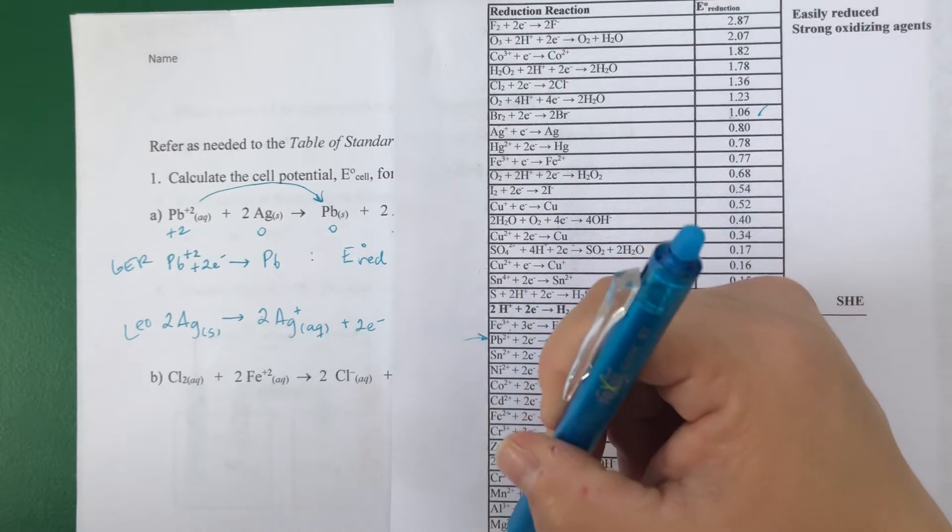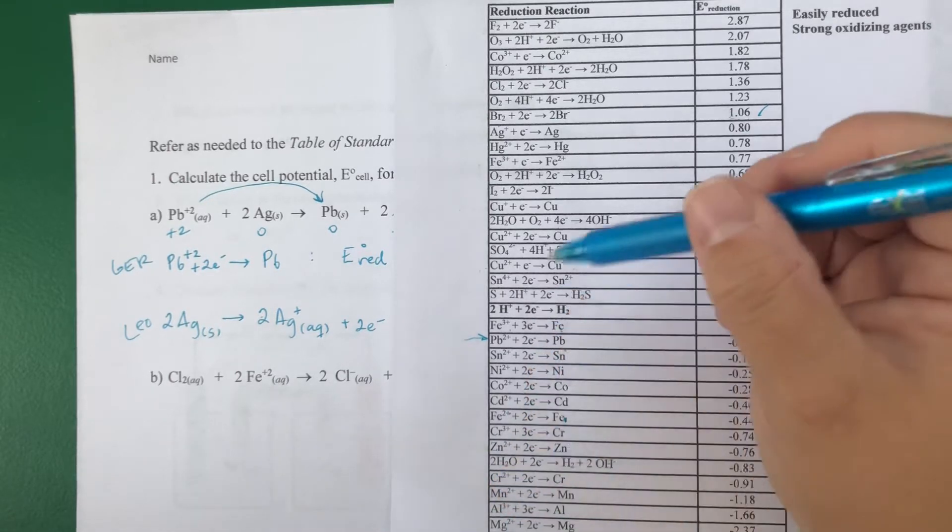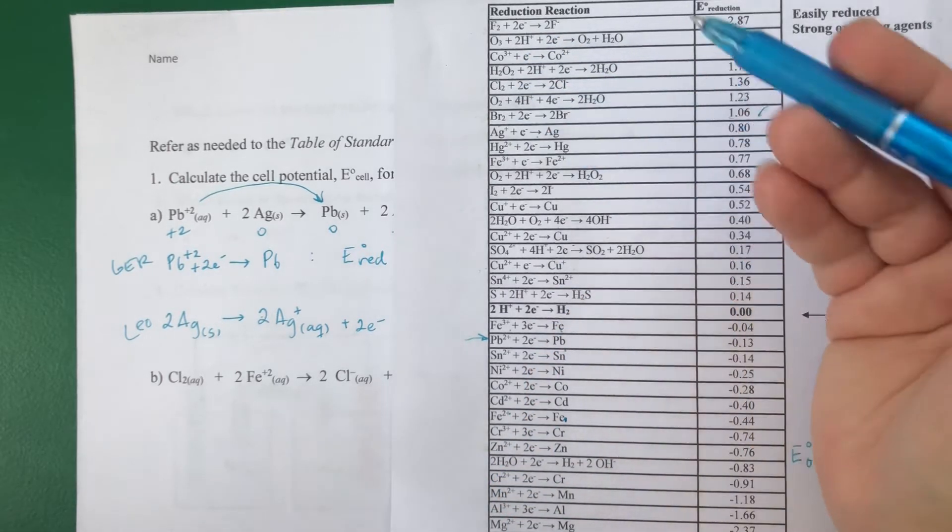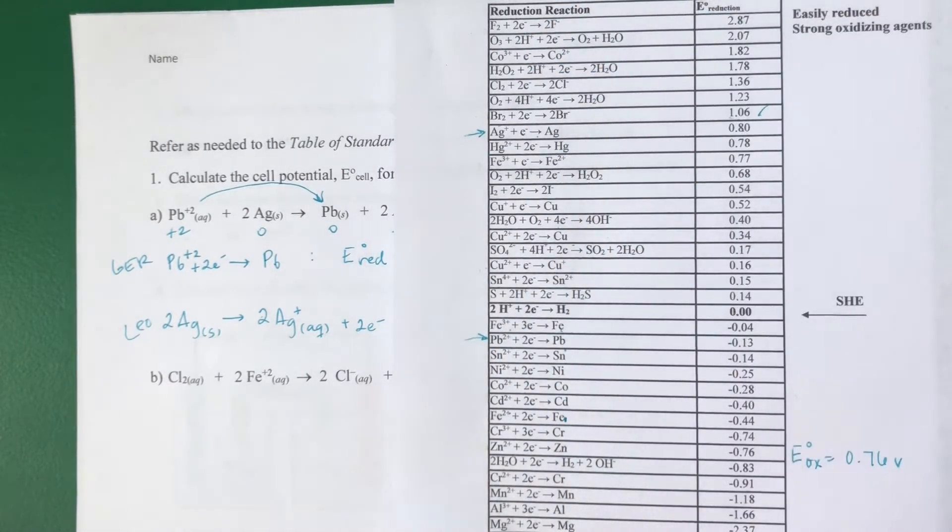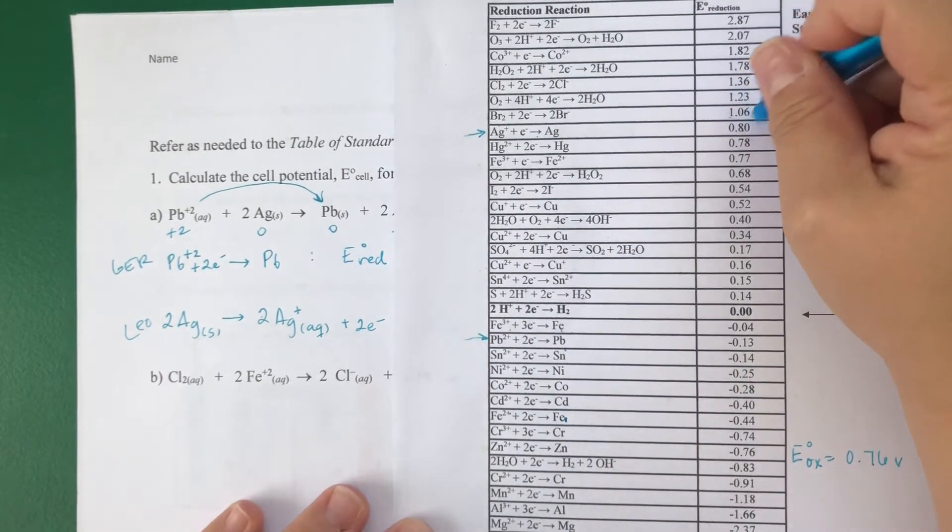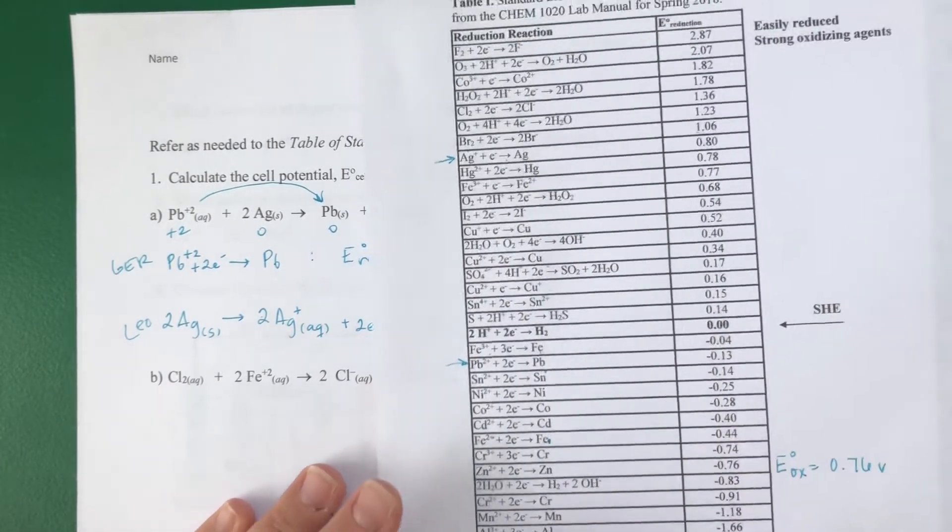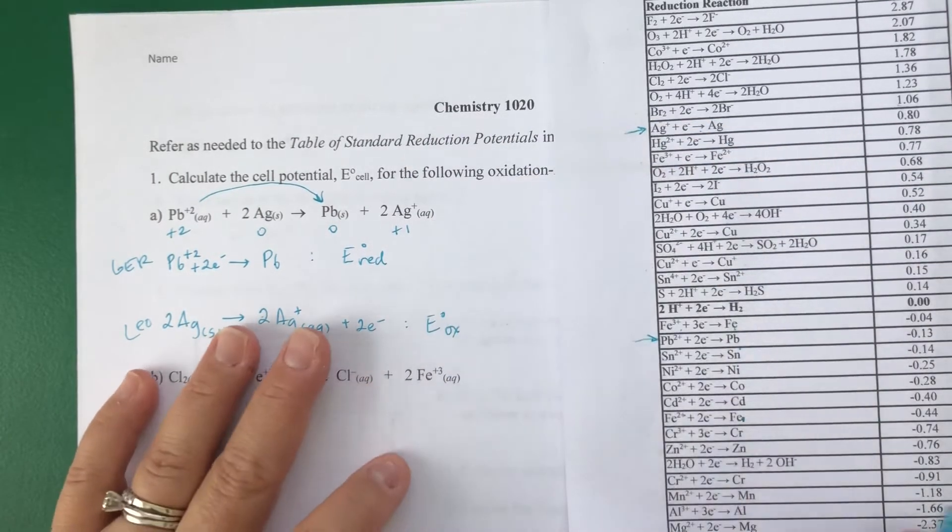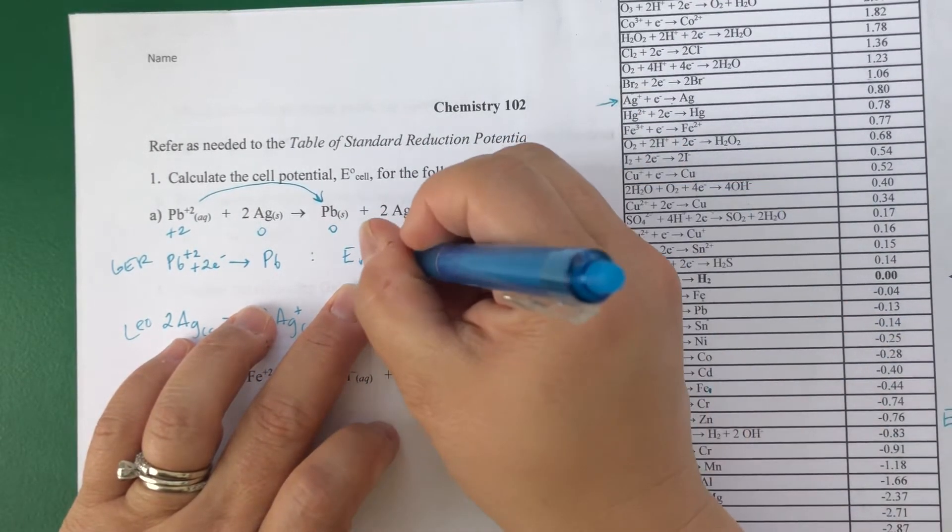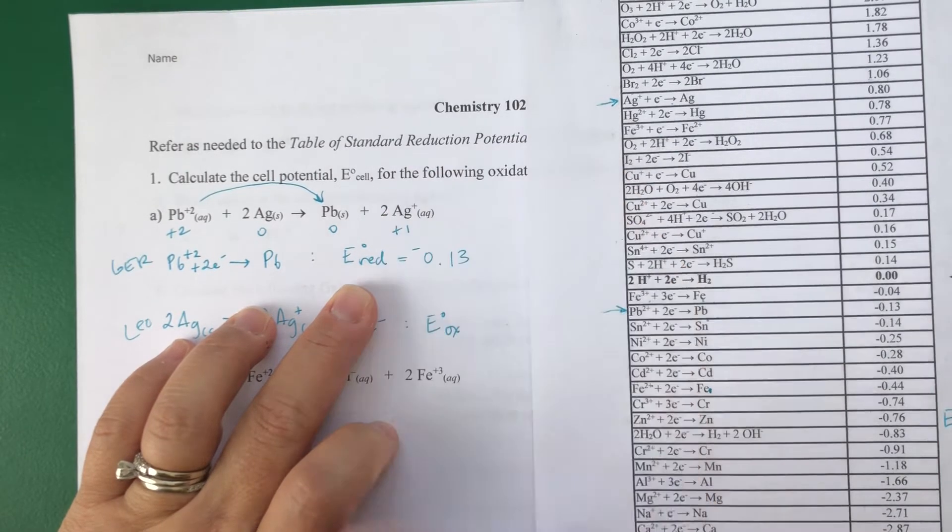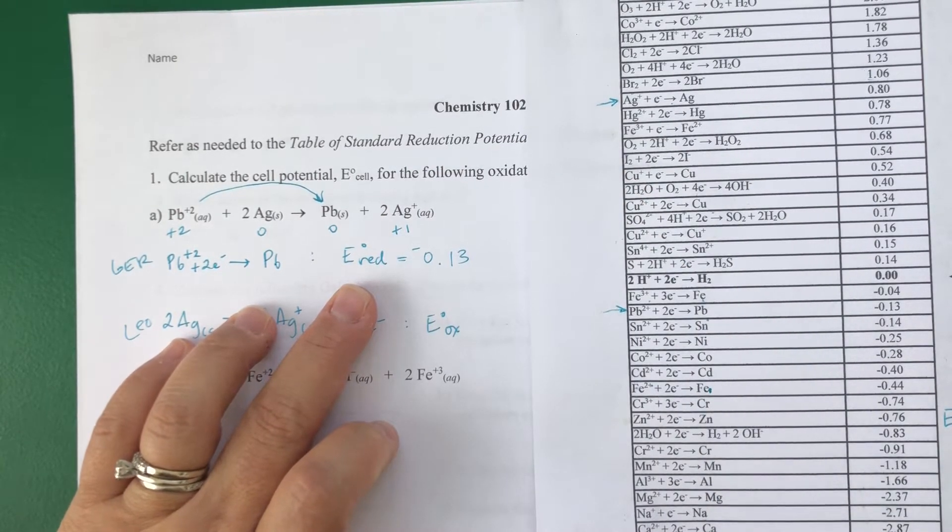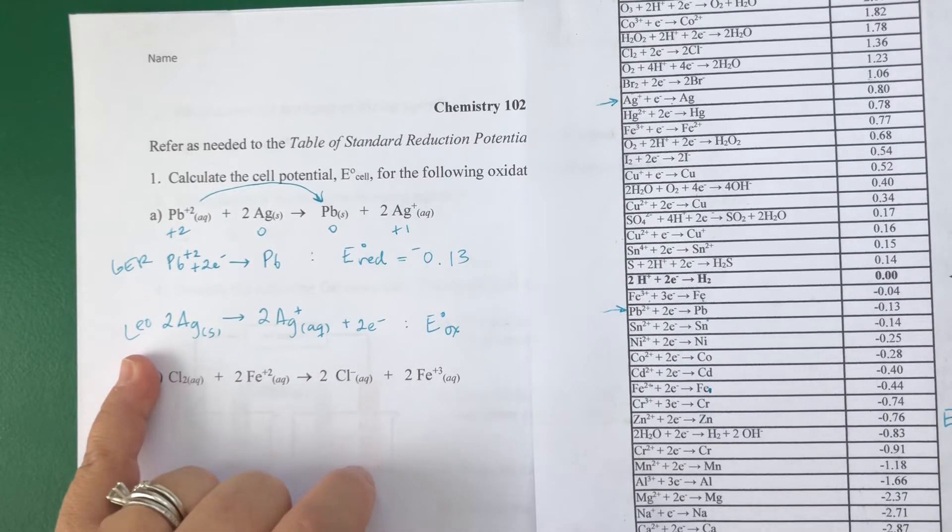I bet someone out there found it before me. I'm distracted by the power washing going on next door. Here we go. Silver. So let's go with lead first, since that's a reduction potential. And that's negative 0.13. And then my oxidation is 0.80.